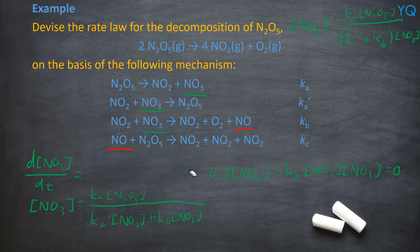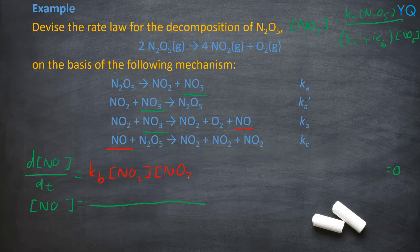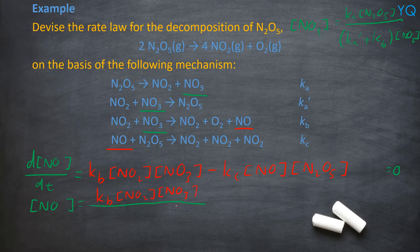Now let's do the second intermediate, NO. Same approach: write the equation and make NO the subject. d[NO]/dt = 0. NO is formed in the third step: +Kb[NO2][NO3]. NO is consumed in the fourth step: −Kc[NO][N2O5] = 0. Solving for [NO]: [NO] = Kb[NO2][NO3] / (Kc[N2O5]).